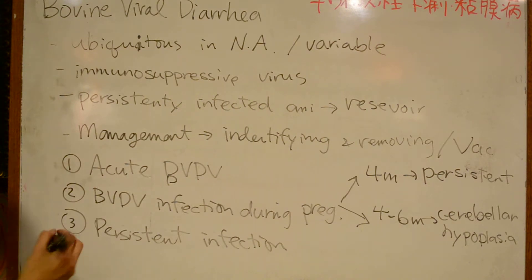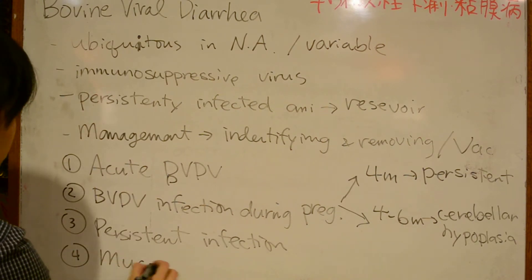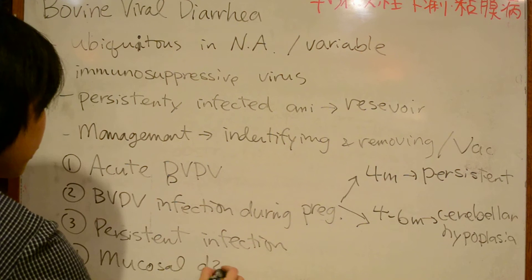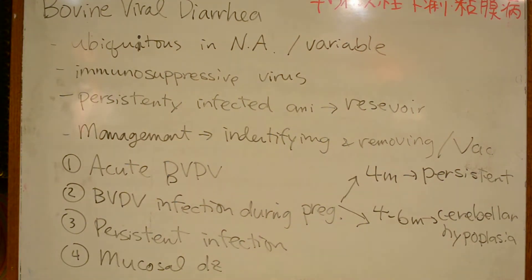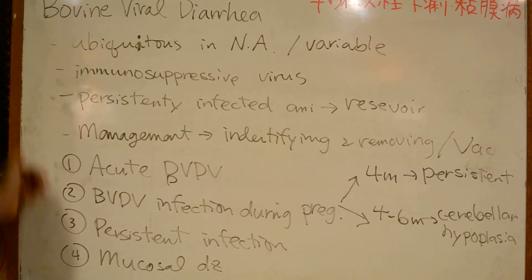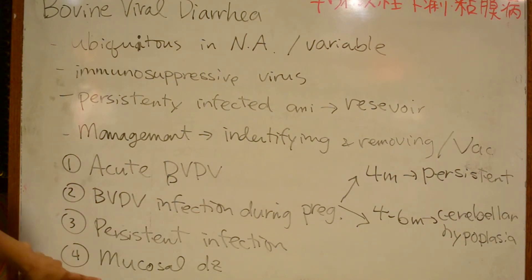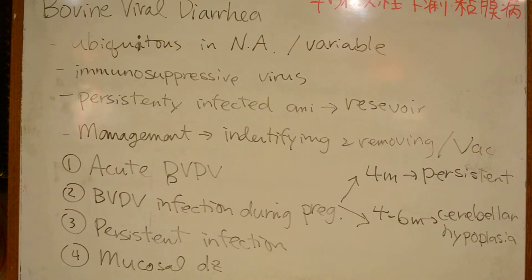We also need to remember mucosal disease and BVDV infection. Non-pathogenic Bovine Viral Diarrhea virus, which is an RNA virus, can mutate and become a pathogenic virus, causing mucosal disease in cattle. Clinical signs include fever, severe diarrhea, leukopenia, and erosions and ulceration of the mouth and nose.